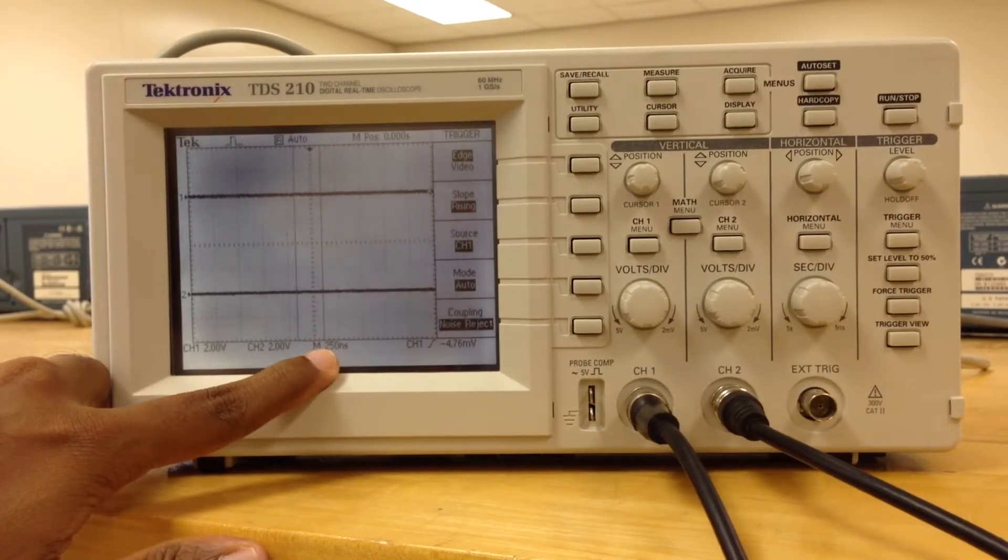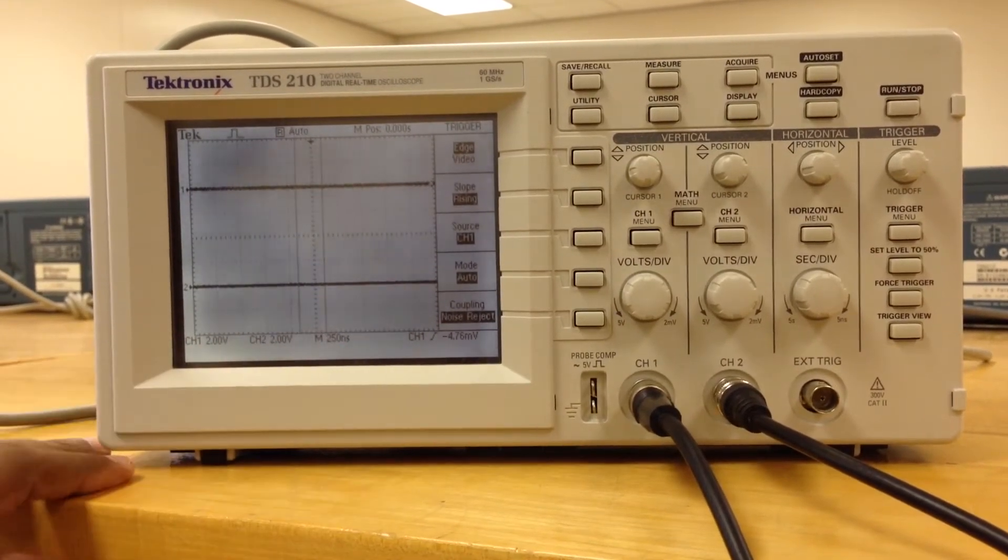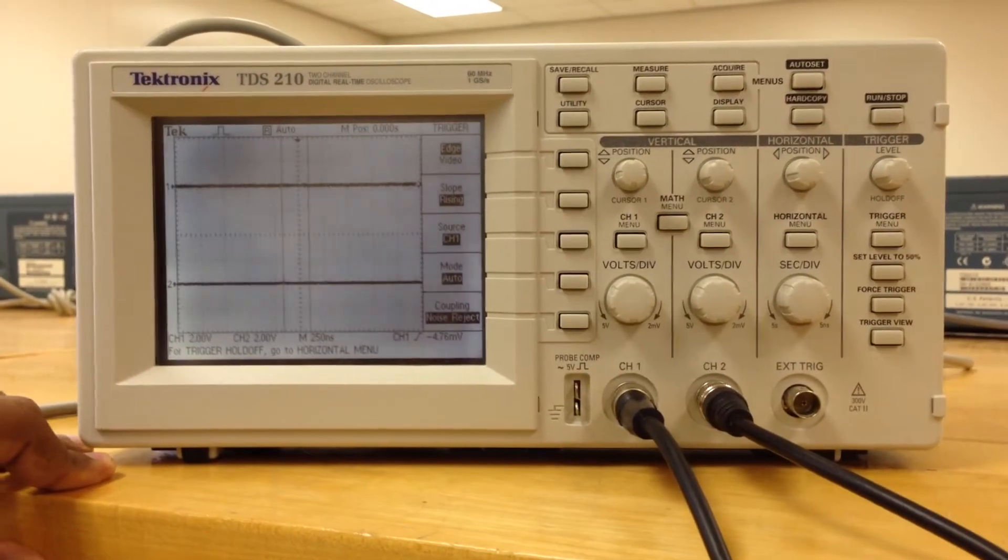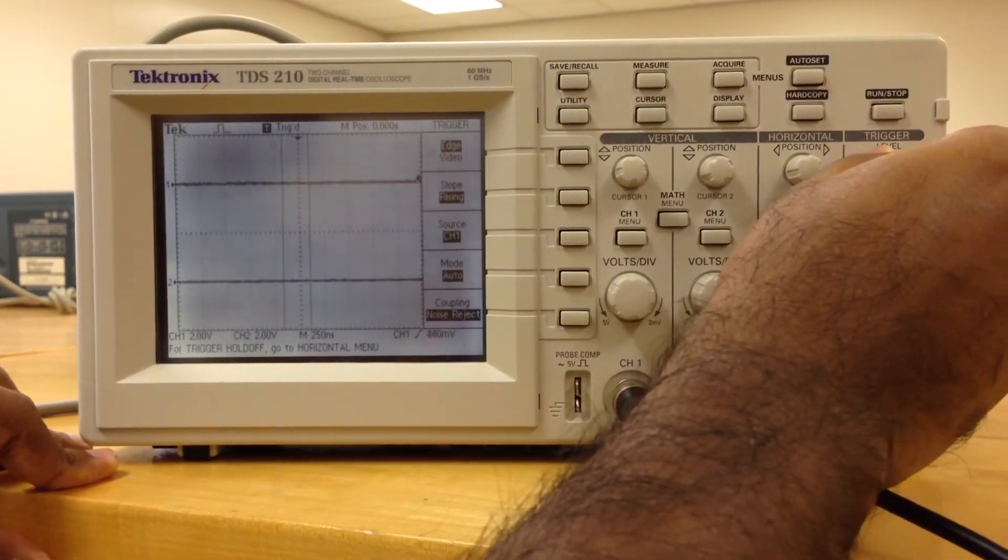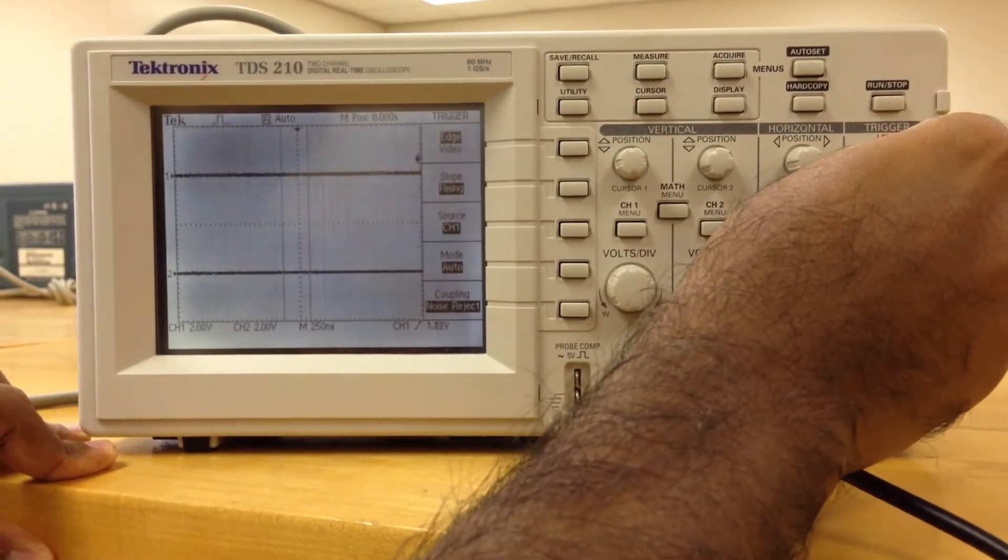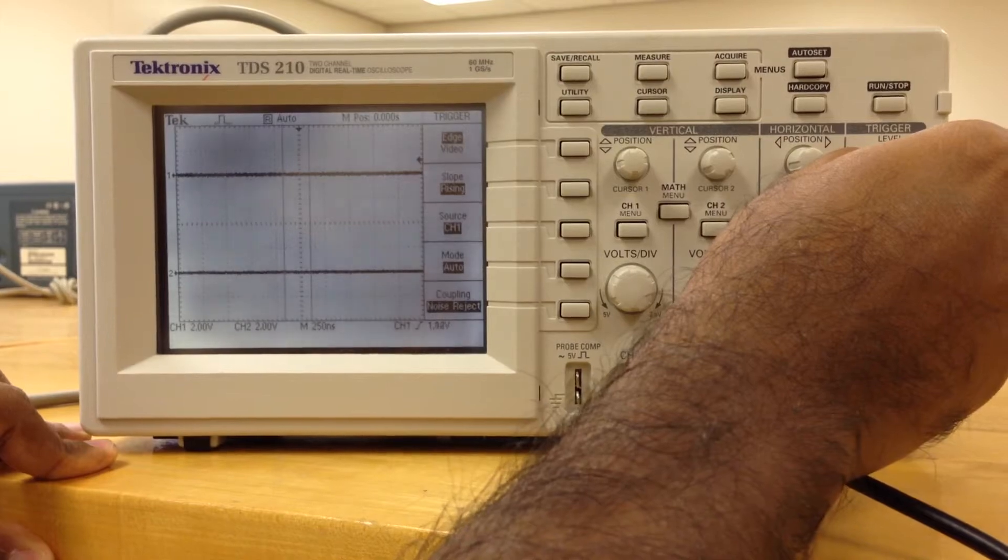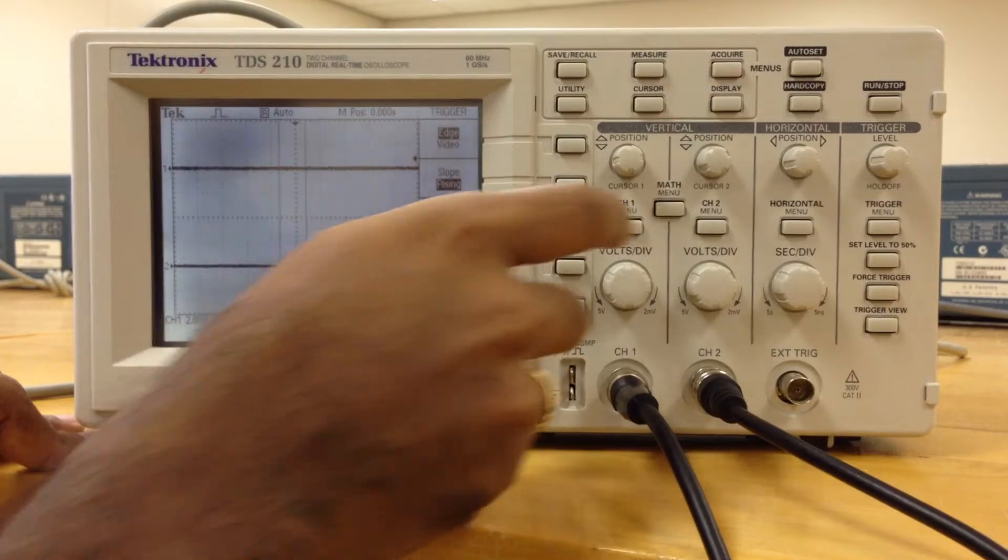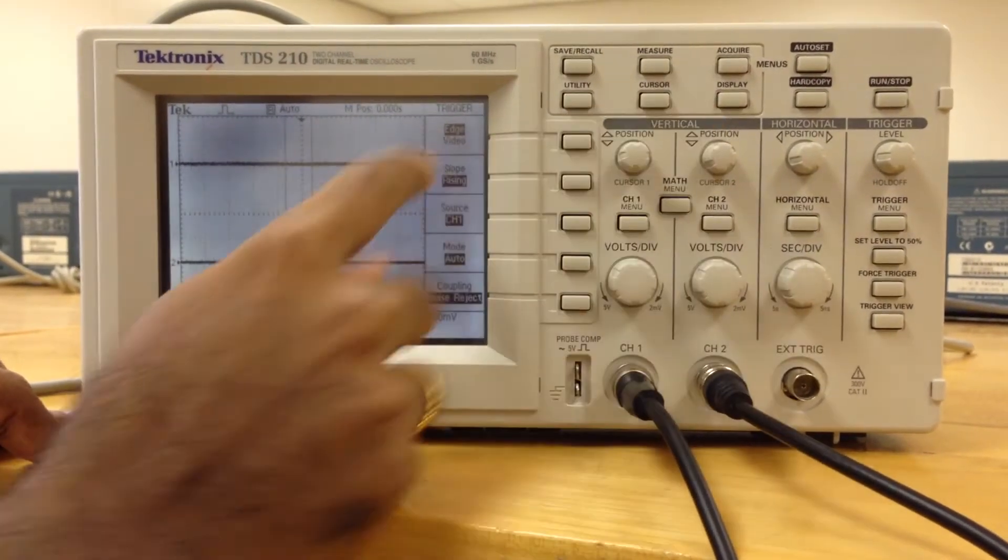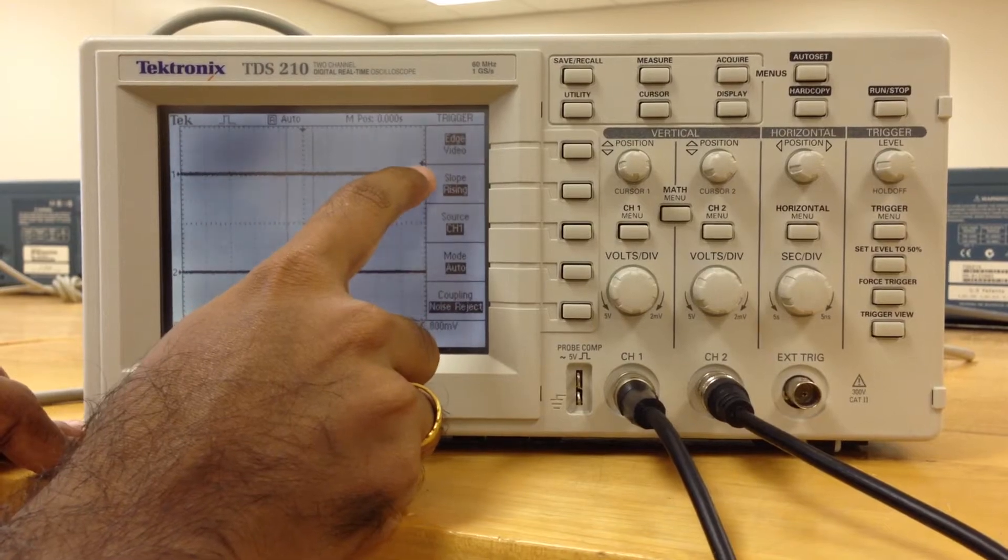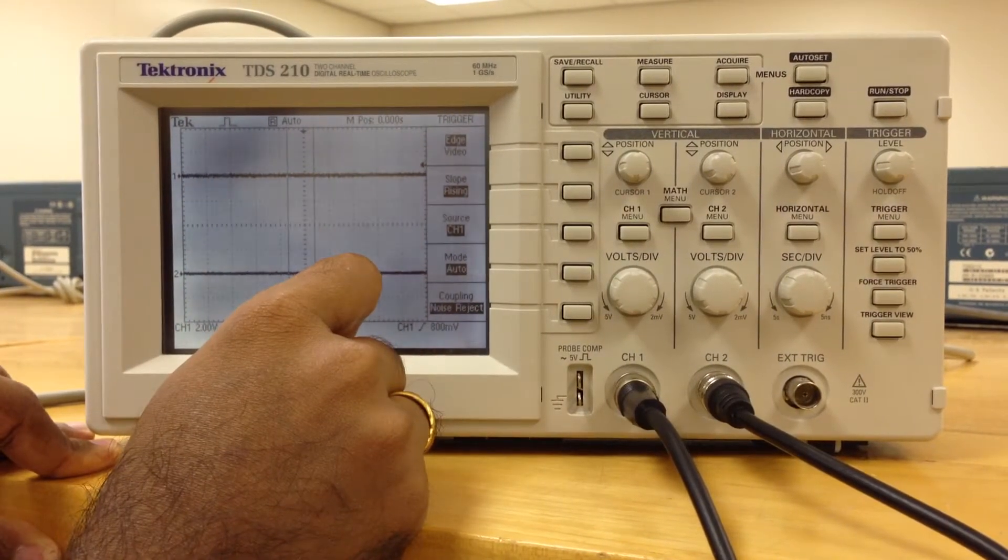The next step is to press this trigger menu. Once you press the trigger menu, you will get a small arrow like this which you can adjust by changing this level. Make sure that the small arrow is slightly above your channel 1. As you can see here, the arrow is slightly above channel 1.